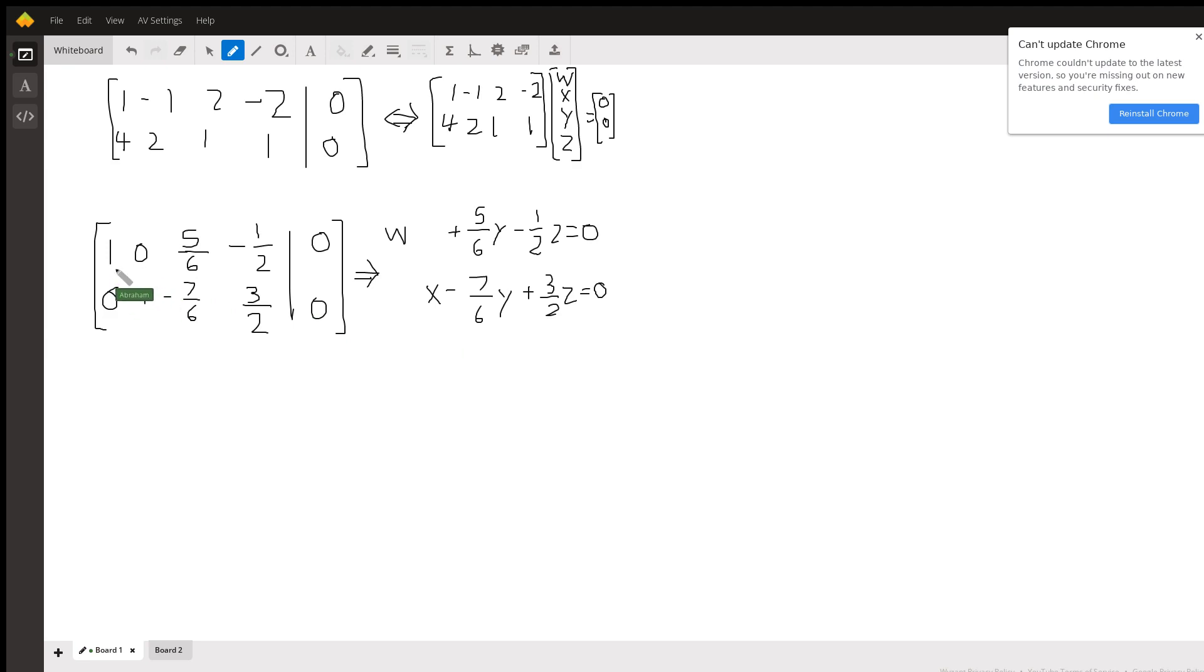We have two pivots here, and that means we have two free variables since we have four total. So the two free variables, by convention, we're going to say are y and z. And so we're actually going to write everything in terms of y and z.